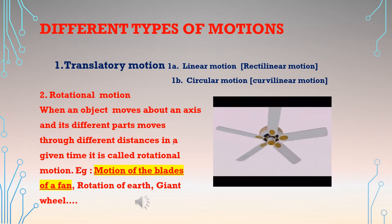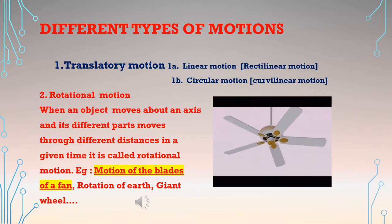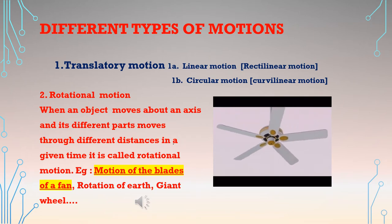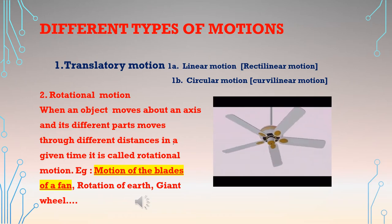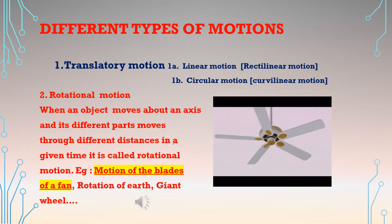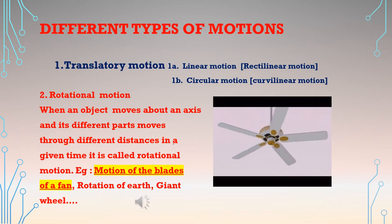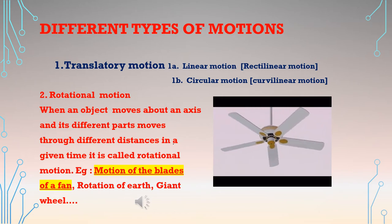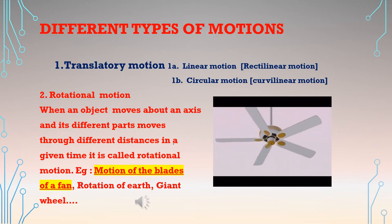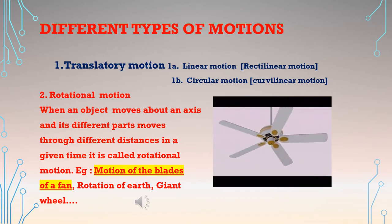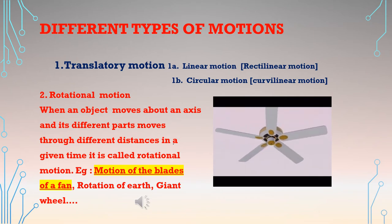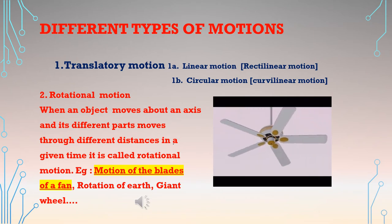The second type is rotational motion. When an object moves on an axis and its different parts move through different distances in a given time, it is called rotational motion. Examples include the motion of the blades of a fan, rotation of the earth, and movement of a giant wheel.